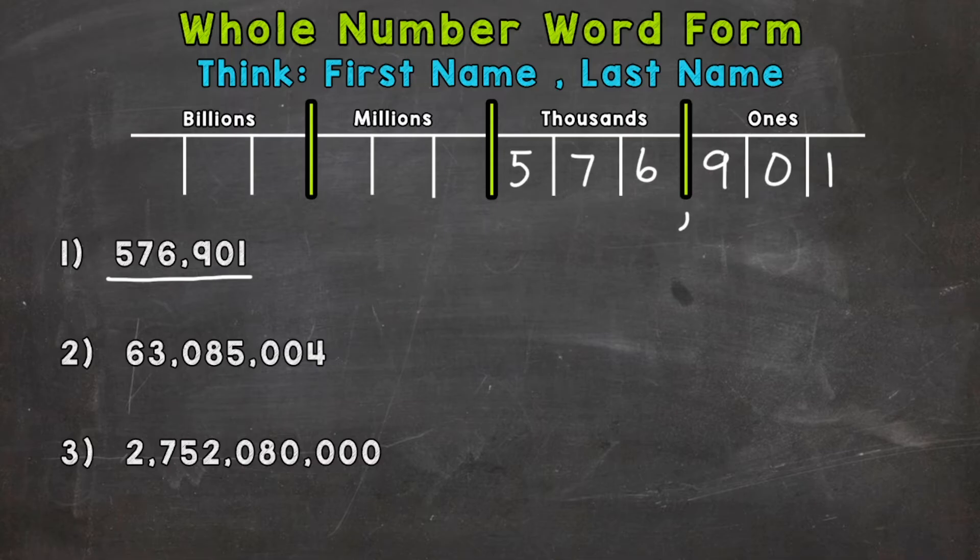Now, before I write that in word form, I do want to mention that the sections on the top of that place value chart, so the ones, thousands, millions, billions, those go on forever. But in this video, we're only going up to the billions. Now, those sections separated by commas are called periods. And it's very important to know your periods when it comes to word form and just numbers in general.